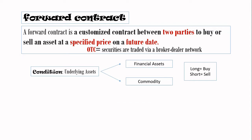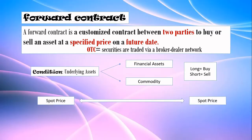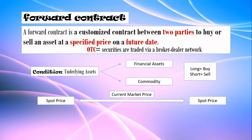One very important concept in forward contracts is the spot price, and it's essential that you know it — without knowing it, you cannot do the deal. Simply put, spot price means the current market price. You're making a deal with a party involving an underlying asset, and that asset must have a current market price. For example, if you are making a deal on mangoes, those mangoes must have a current market price, because without knowing it, you cannot make a deal for a future date.